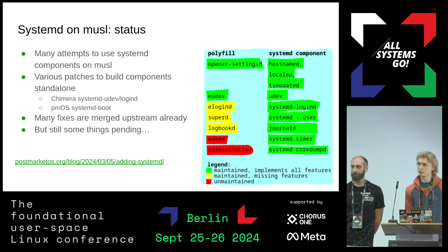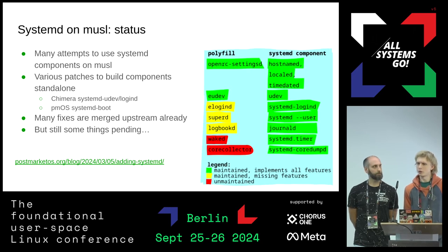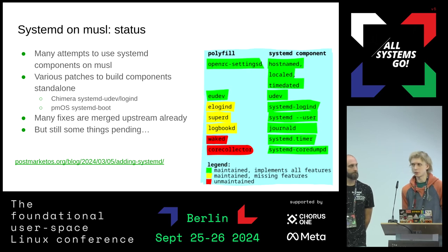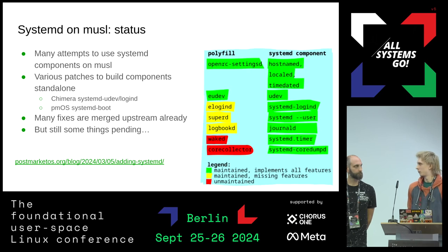Question: for the work on PostmarketOS, have you come across anything in systemd that had problems on some specific device but not others? Answer: nothing so far. We haven't opened up the systemd branch to broader testing yet because there have been a lot of challenges, and there are still issues with upgrading packages. We don't expect device-specific problems to be significant, since most devices are pretty similar — it's mostly the bootloader and kernel side of things.